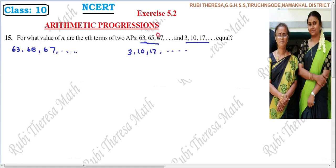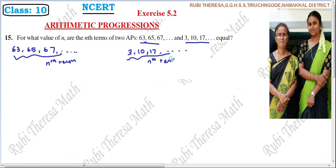One sequence is 63, 65, 67 and it goes on. And what is the second sequence? 3, 10, 17 and it goes on — an infinite AP. So here are Nth terms in each sequence, and we need to find the N where the Nth terms of these two APs are equal.